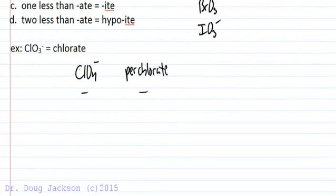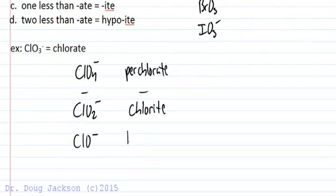What if we go one less? ClO2 minus. Now we are at chlorite, and then if we are ClO, and we are two less, instead of one less, two less, we are now at hypochlorite. So we have perchlorate, chlorate, chlorite, and hypochlorite, and the naming, systematic naming method is the same for all the -ates.